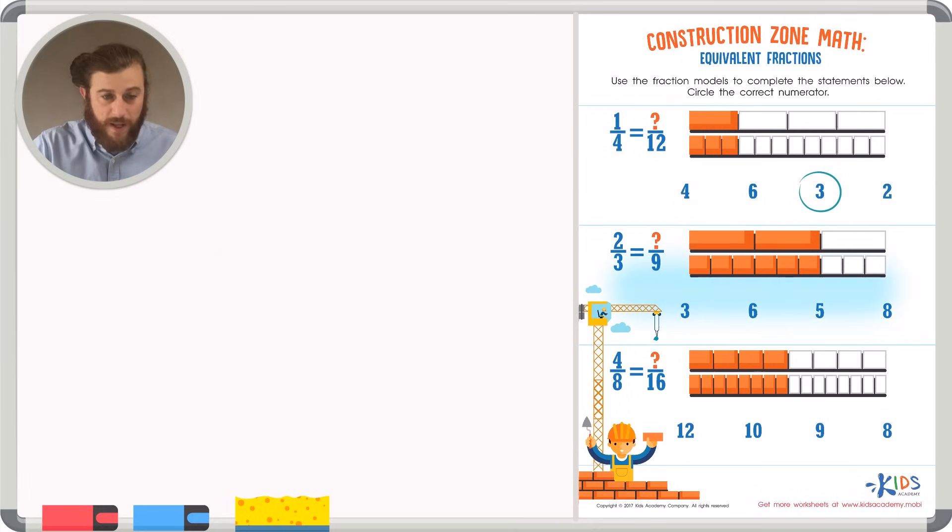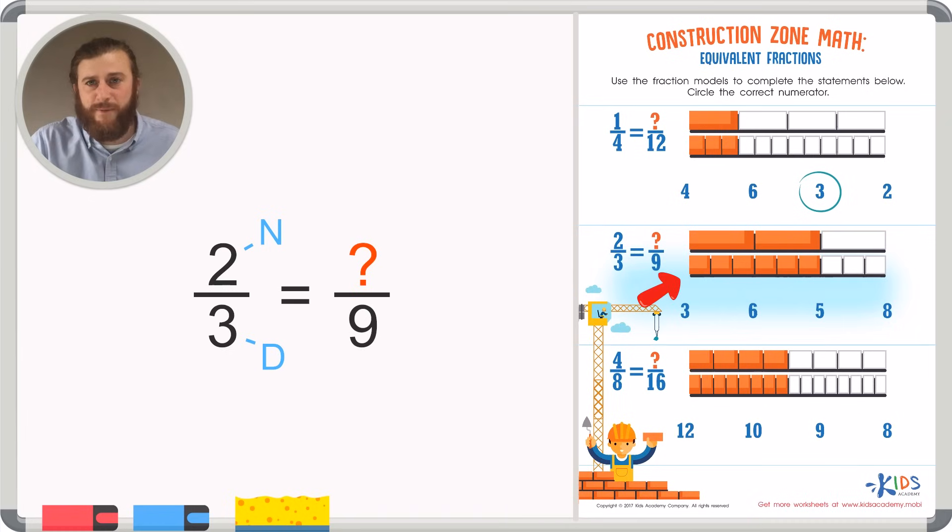Let's take a look at our next example. In this problem, we have two-thirds is equivalent to blank ninths. Again, in our first fraction, three is the denominator, because there are three pieces in total. Two is the numerator, because there are two pieces that are shaded in. Let's look at our second fraction and count the shaded in pieces to see what the correct numerator is to make an equivalent fraction with ninths.